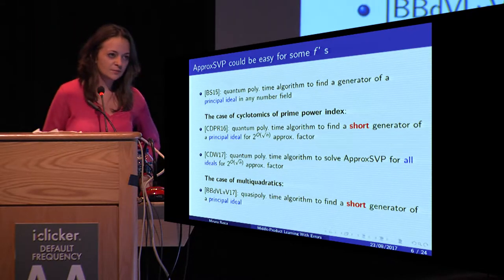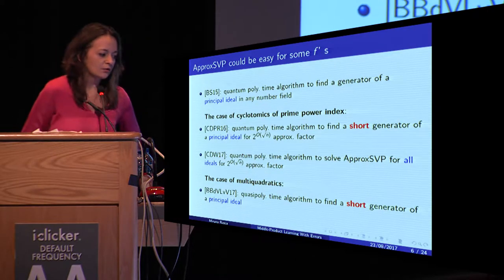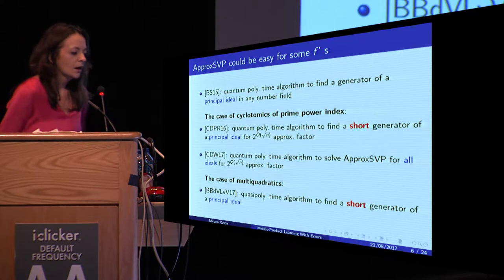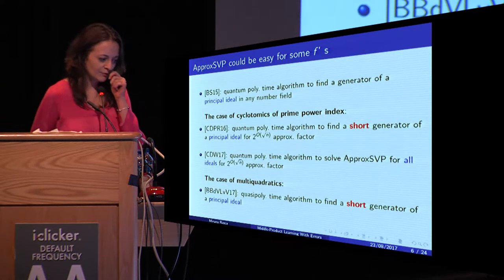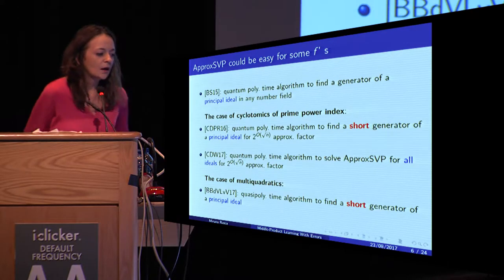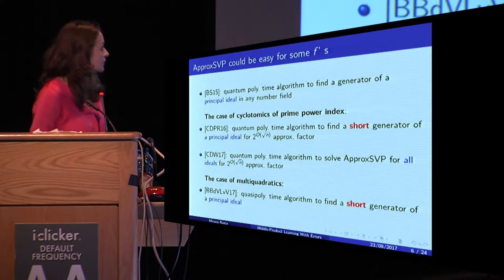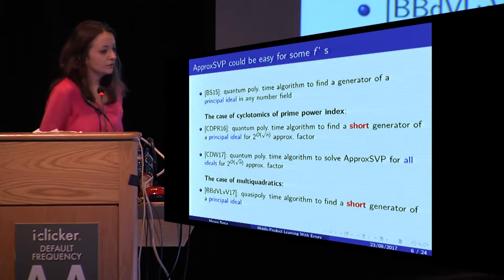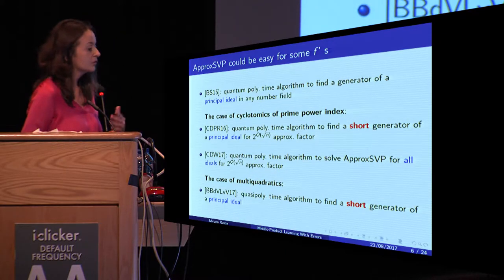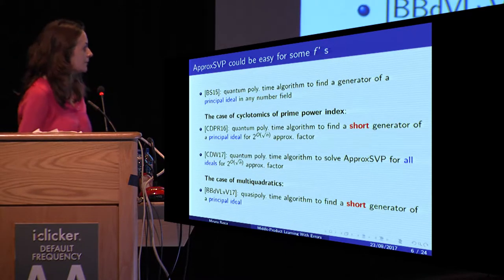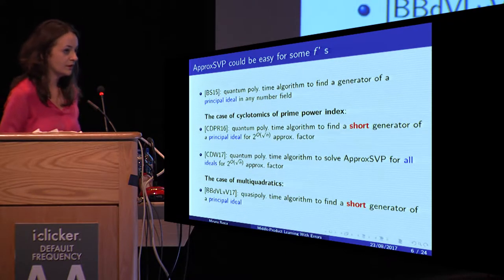Some recent works show that approximate SVP could be easy for some polynomials F. There is a quantum polynomial-time algorithm of Biasse and Song to find the generator of a principal ideal in any number field. Later on, Cramer and his co-authors studied the case of cyclotomics of prime power index, and they gave a quantum polynomial-time algorithm to find a short generator of a principal ideal — short up to a 2 to the square root of n approximation factor.